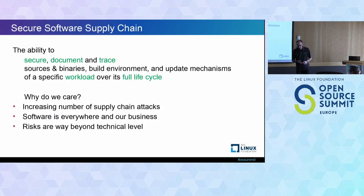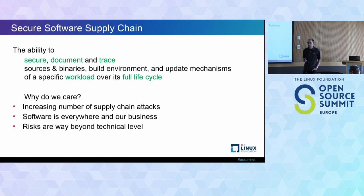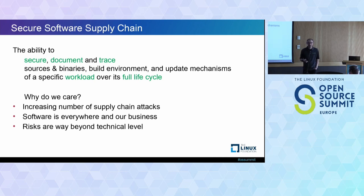So what is the secure software supply chain? The definition is about securing, documenting, and tracing. It's not only about security itself — it's also about the ability to document and trace all details regarding sources, binaries, dependencies, and updates for a specific workload. For each workload you run, you should be able to document and trace all these details not only upon initial deployment but throughout its life cycle, because at each stage it can be attacked.